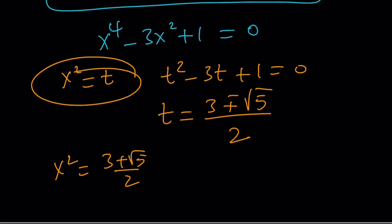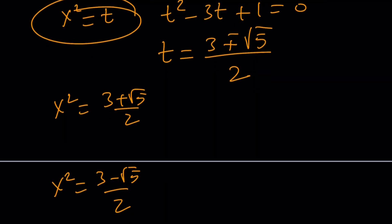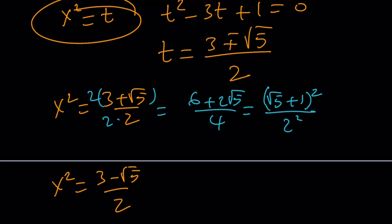Now, there is a really cool way to solve for x here. Let me show you. I'm going to multiply the top and the bottom by 2. So, this is going to become 6 plus 2 root 5 over 4. This is actually root 5 plus 1 squared, if you think about it, right? And this is 2 squared. So, its square root is going to be root 5 plus 1 divided by plus minus 2. So, that gives us two solutions.